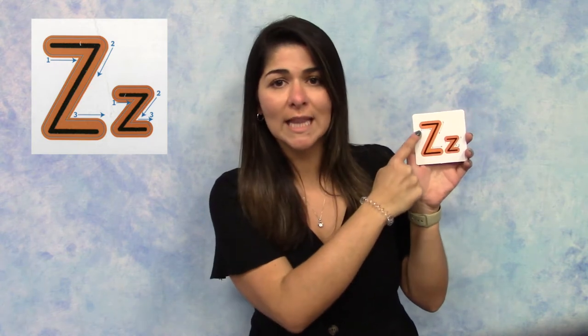You can follow along with the Z up here. The first thing you're going to do is draw a line from left to right across, a line down and diagonal, and then another line over from left to right across.